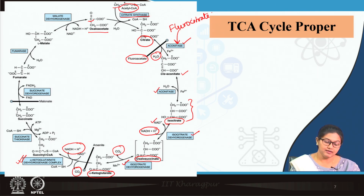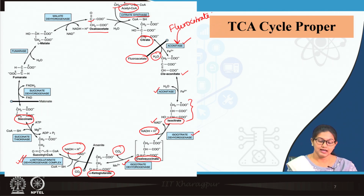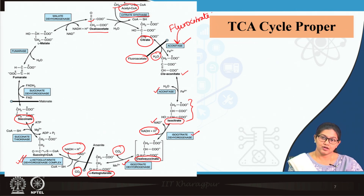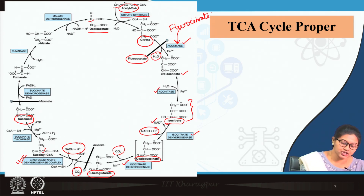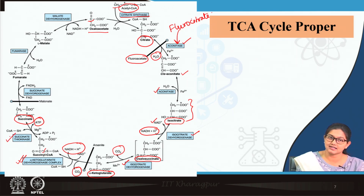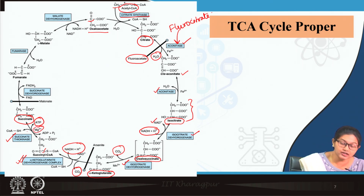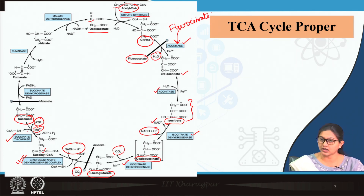Succinyl coenzyme A is converted to succinate. This is one substrate-level phosphorylation: in succinyl coenzyme A there is a high-energy thioester bond which helps in formation of ATP with the help of the enzyme succinate thiokinase. Remember, in all kinases there is a magnesium ion required as cofactor. The product is succinate, a 4-carbon compound.